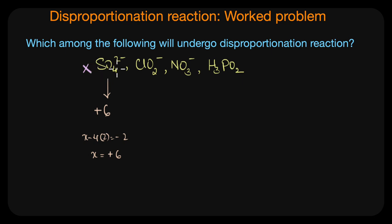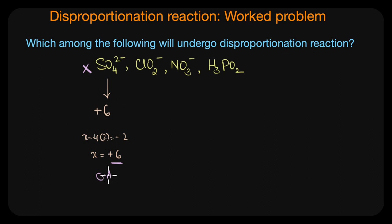Sulfur is in the plus six oxidation state, which is the highest possible oxidation state that sulfur can have — it cannot be further oxidized. Because it is in the highest oxidation state, sulfate ion cannot undergo a disproportionation reaction, but can definitely act as a strong oxidizing agent and undergo reduction to a lower oxidation state. So sulfate ion is not a candidate for disproportionation.